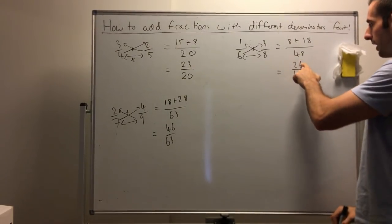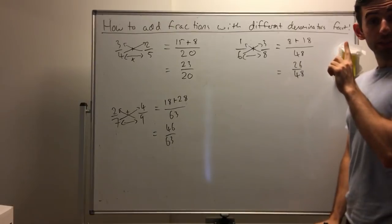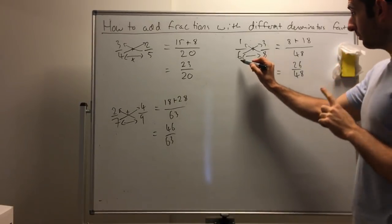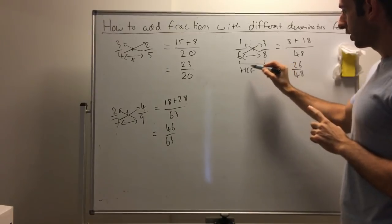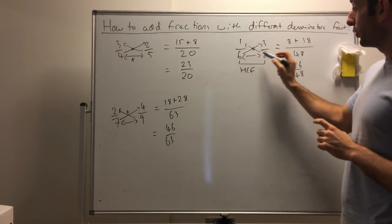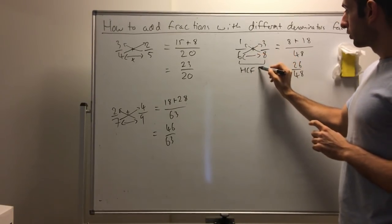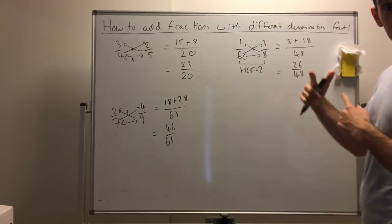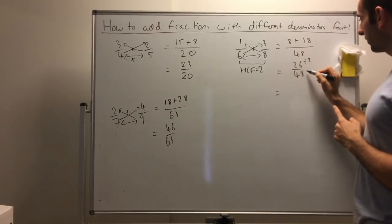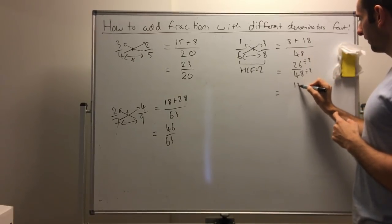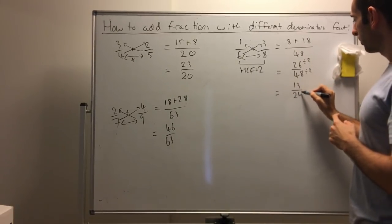You notice they have a common factor. The trick to finding what the common factor is: you find the HCF, highest common factor of the two numerators, which is just 2. That's what you divide out. Divide 26 by 2 and 48 by 2. That gives you 13 on 24.